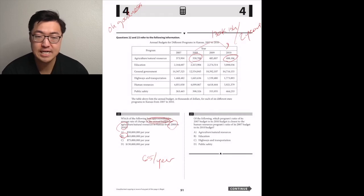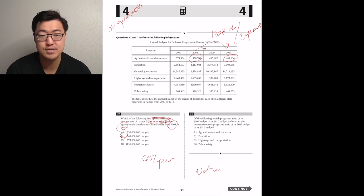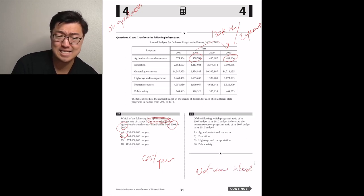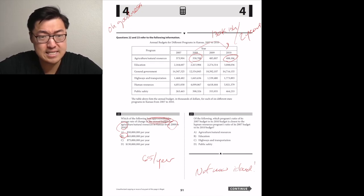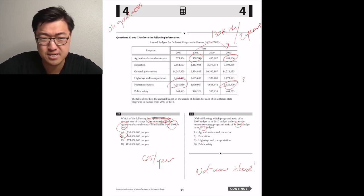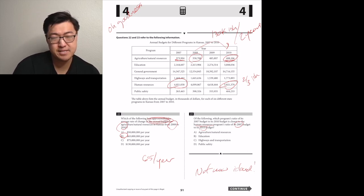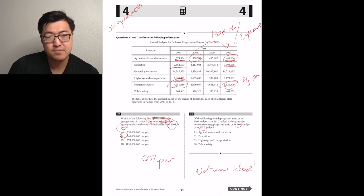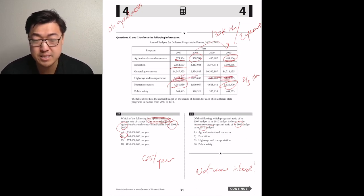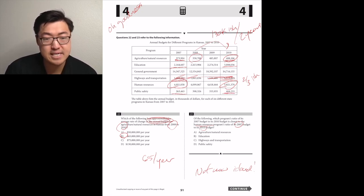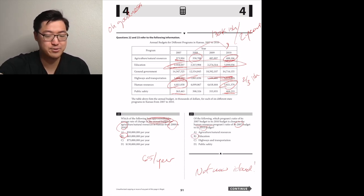Number 23, which program's ratio of its 2007 budget to its 2010 budget is closest to the human resources programs ratio 2007 to 2010 budget? Human resources, 2007, 4 million ish, 2010, 6 million ish. So we're looking for something roughly two thirds. Agriculture, natural resources, that's going to be like three fourths or something. That's kind of maybe close. Education, 2 million ish to 3 million. Oh, it might be that. Highways and transportation 1.4 to 1.7. That's a little bit too close. I think two thirds would be something closer to like 1.2. Public safety, 260,000. That's more like a half. I think it's B again, check with your calculator though.